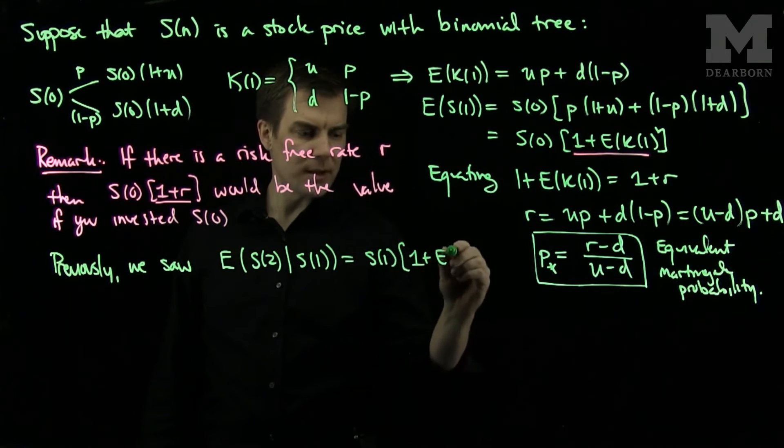So the discounted stock prices at time n that follow a binomial tree, measured with respect to the risk-free probability measure P*, will give you a martingale sequence. And we'll see in future videos how we can exploit the properties and theorems of martingales to make information and decisions about stock prices at future times. Thank you very much.